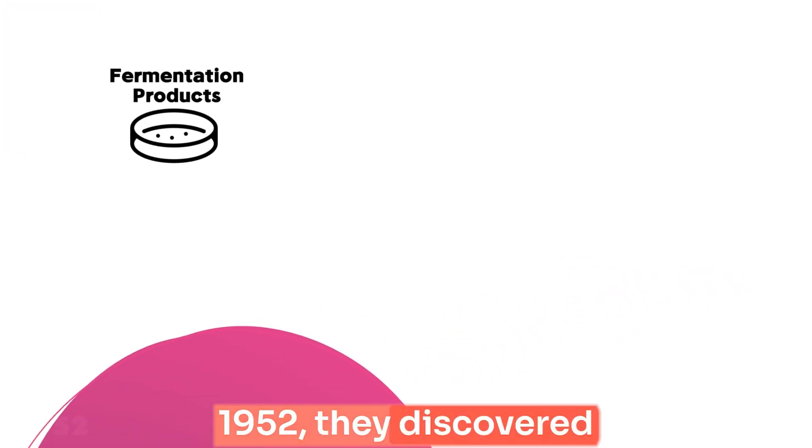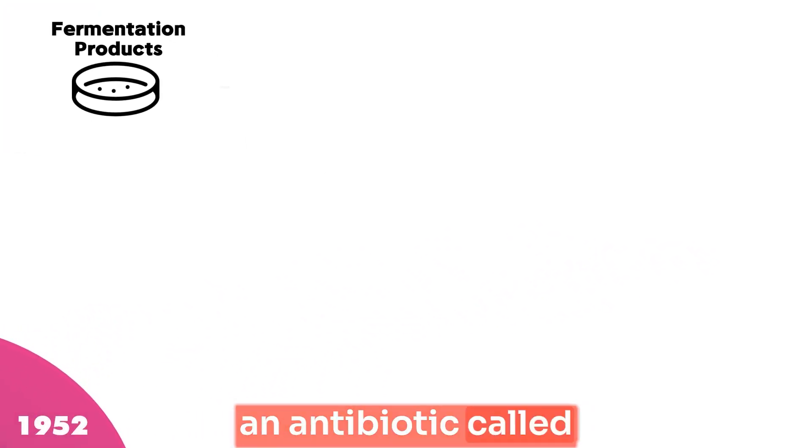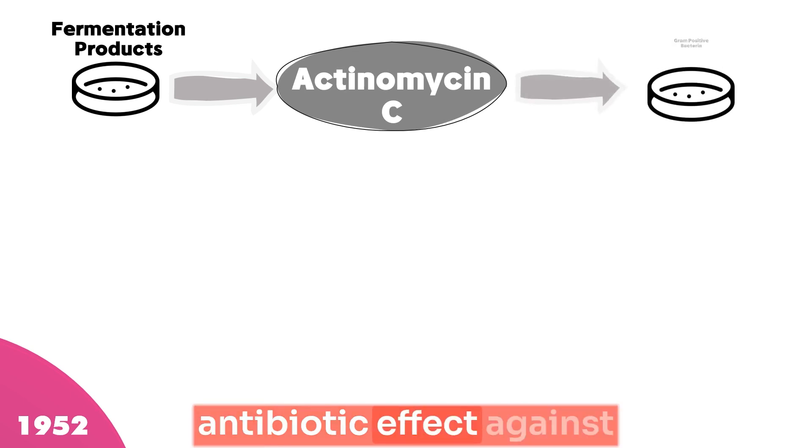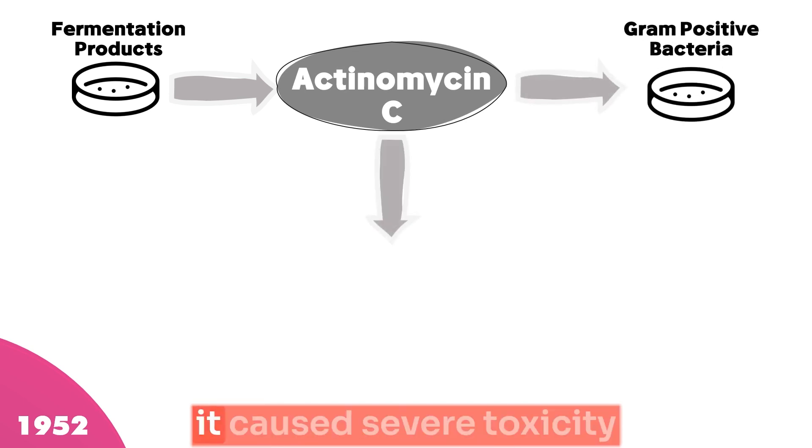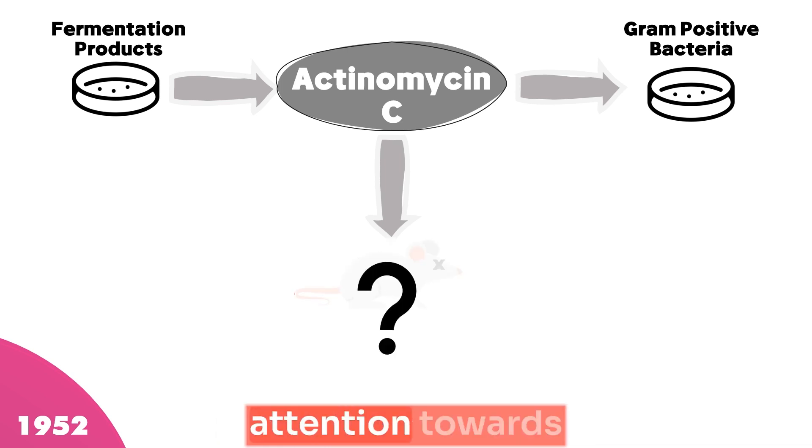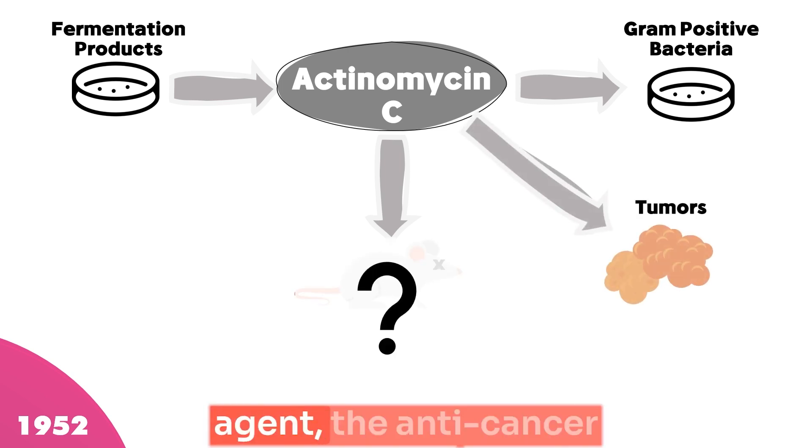In 1952, they discovered an antibiotic called actinomycin C. Despite of its significant antibiotic effect against gram-positive bacteria, it caused severe toxicity in animals, which drew the researchers' attention towards its usage as an anti-tumorgenic agent.